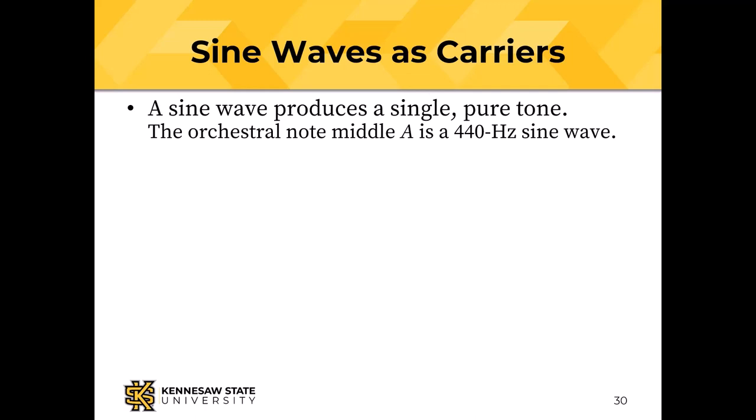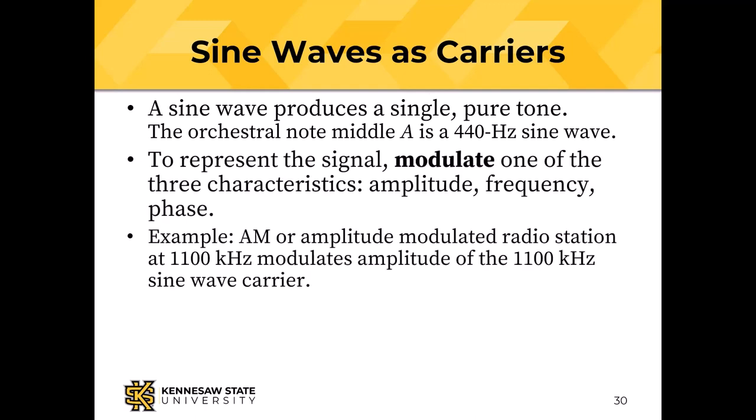A sine wave — one pure tone, like middle A at 440 Hz — must be modulated to transmit data. The characteristics of a sine wave are amplitude, frequency, and phase. AM radio modulates the amplitude of the signal; a demodulator recovers the original signal.